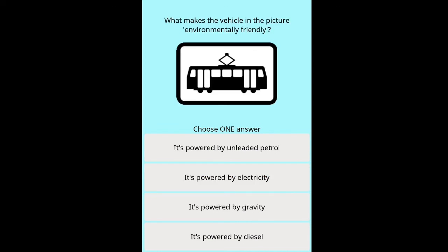Question: What makes the vehicle in the picture environmentally friendly? Options: it's powered by unleaded petrol, it's powered by electricity, it's powered by gravity, it's powered by diesel.